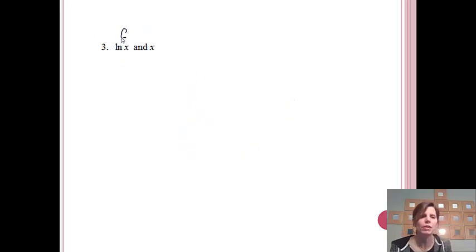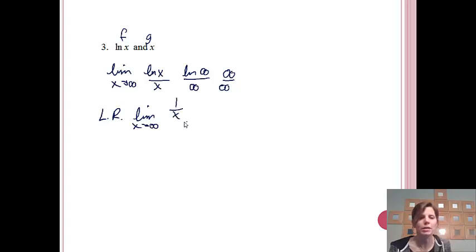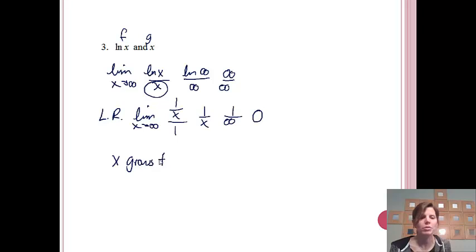Now let's compare ln(x) and x. We'll find the limit as x approaches infinity of ln(x) over x. Plugging in infinity gives ln(infinity) over infinity, which is infinity over infinity — indeterminate, so we use L'Hôpital's Rule. Taking derivatives, the derivative of ln(x) is 1/x and the derivative of x is 1, so I get 1/x. Plugging in infinity gives 1/infinity, which equals 0 — meaning the bottom function is growing faster: x grows faster than ln(x).